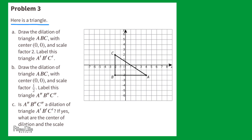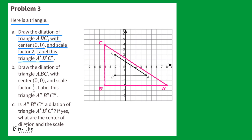Problem number 3. Here is a triangle. Part A: Draw the dilation of triangle ABC with center coordinates (0, 0) and scale factor 2. Label this triangle A', B', C'. First I identify (0, 0) as the center. The distance from center to A is 4 to the right and 2 down. Since this is a scale factor of 2, I go another 4 to the right and 2 down to find A'. For B: 2 to the left and 2 down, repeated to find B'. For C: 2 to the left and 2 up, repeated to find C'. Connect the dots to see the triangle A', B', C' with center (0, 0) and scale factor 2.